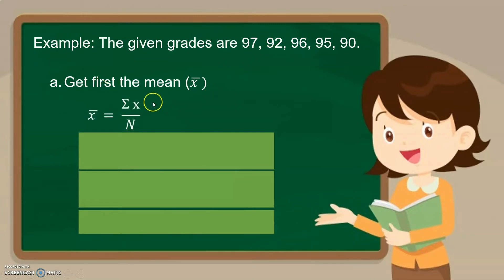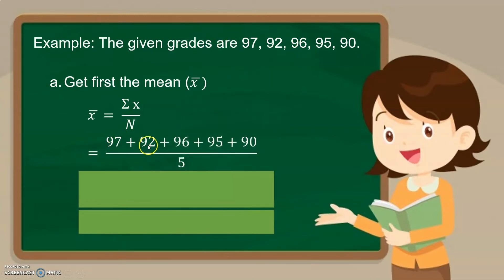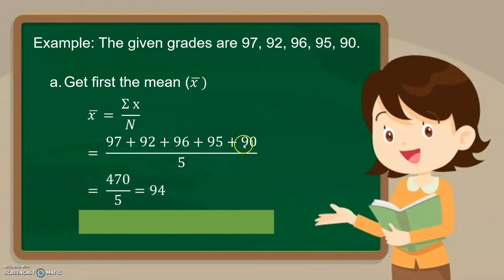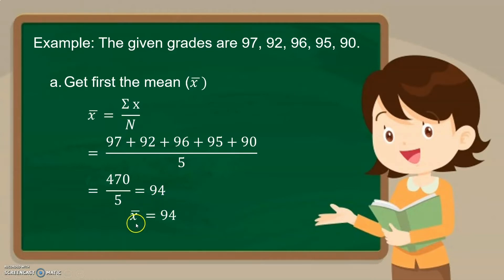To get the mean, the formula is summation of x over n. We add all scores: 97 plus 92 plus 96 plus 95 plus 90, divided by 5 — since there are 5 values. The total is 470, and 470 divided by 5 equals 94. So our mean is 94.